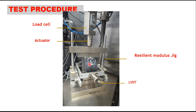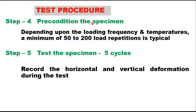The jig is kept in position using four screws, along with an LVDT, actuator, and load cell with cyclic loading. Step 4 is preconditioning of the specimen, and depending upon loading frequency and temperature, a minimum of 50 to 200 load repetitions is typical. After this seating load, we test the specimen for 5 cycles and record the horizontal and vertical deformation.